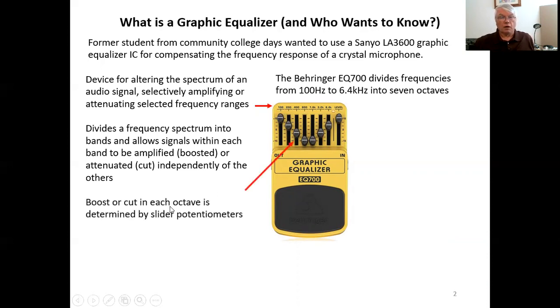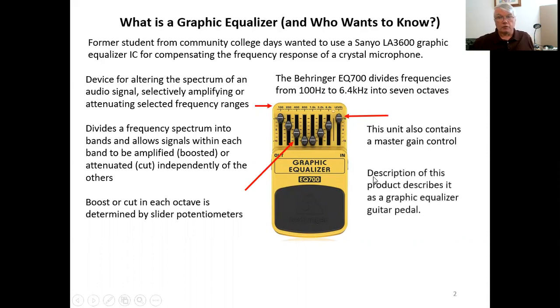The boost or cut in each octave is determined by the position of a slider potentiometer with the center being zero decibels or unity. You can slide it up for boost or slide it down for cut. This unit also has a master gain control or a level control. And its product description calls it a graphic equalizer guitar pedal. I'm not a guitarist, so that's as much as I can say on the subject.